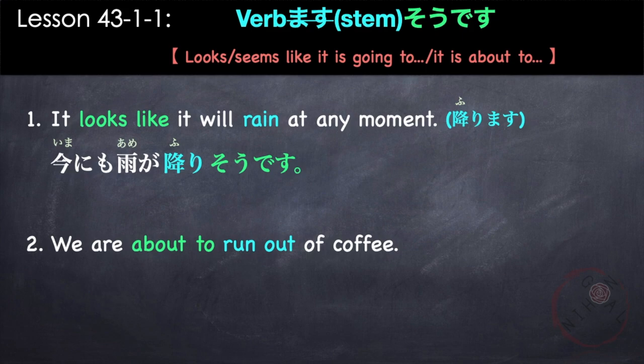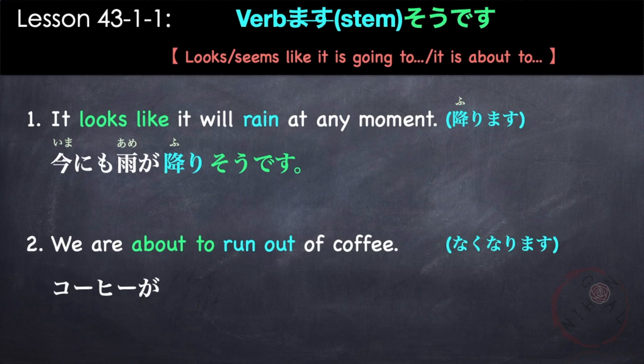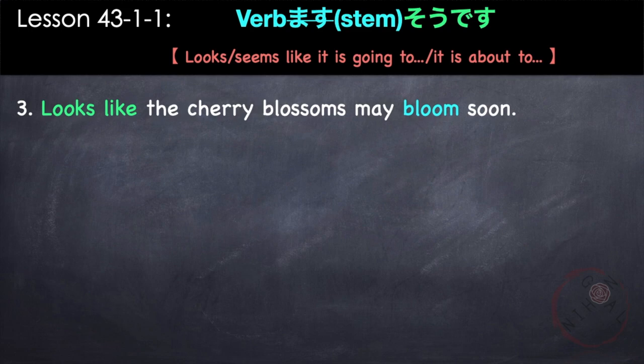Another example: 'We are about to run out of coffee.' The verb is nakunarimas. Ko-hi ga nakunari — remove mas, get nakunari — followed by so desu. Ko-hi ga nakunari so desu. Another example: 'Looks like the cherry blossoms may bloom soon.' The verb is to bloom, sakimasu.